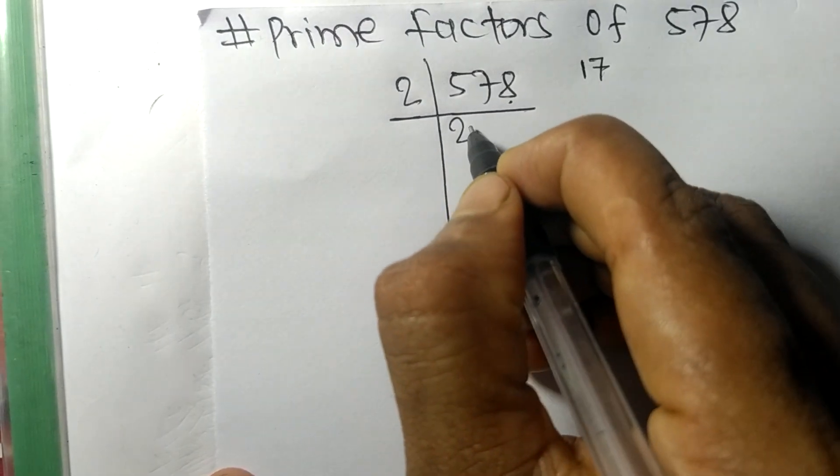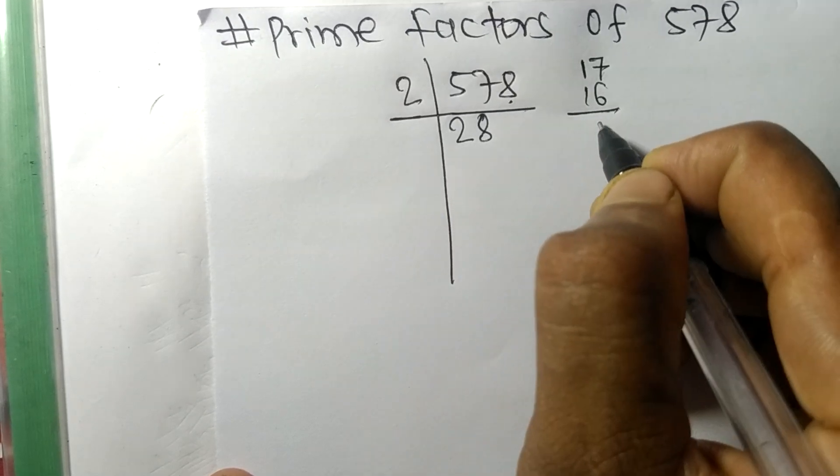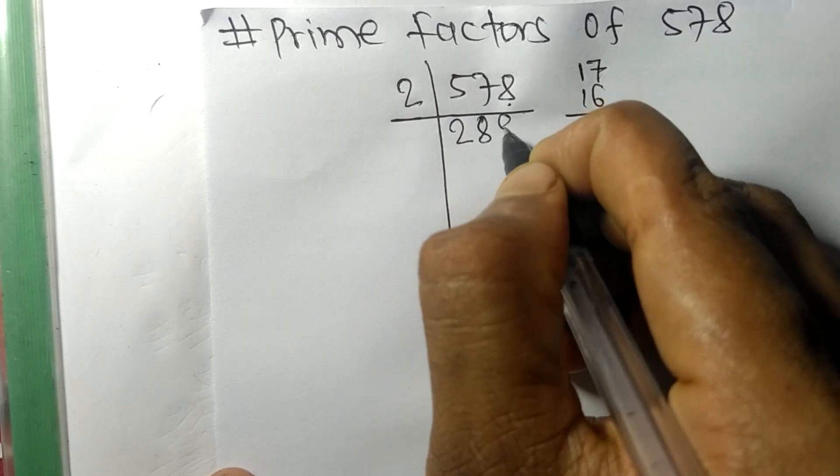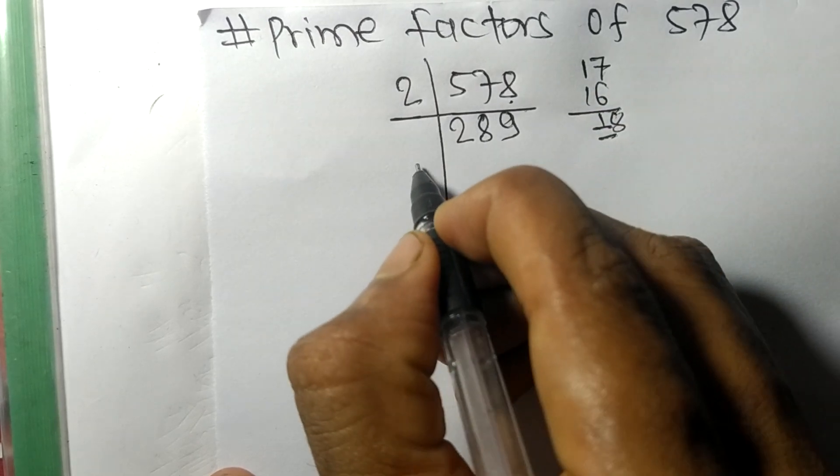17, 2 times 8 means 16, remainder 1 and this 8. 18, 2 times 9 means 18. So now we got 289, which is exactly divisible by 17.